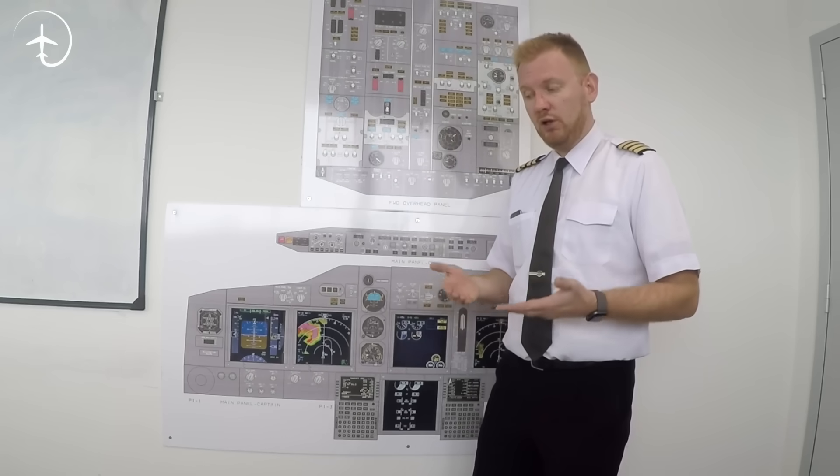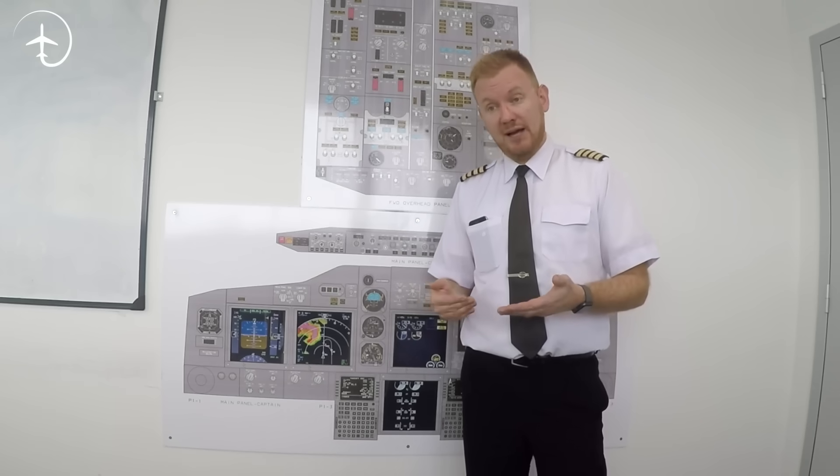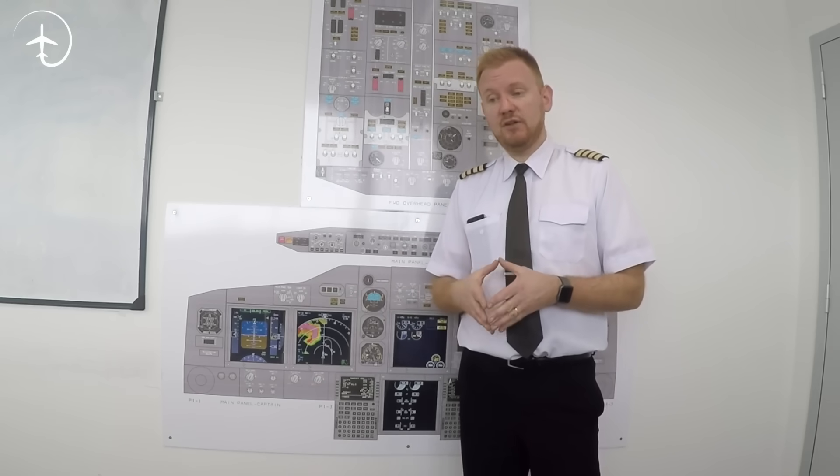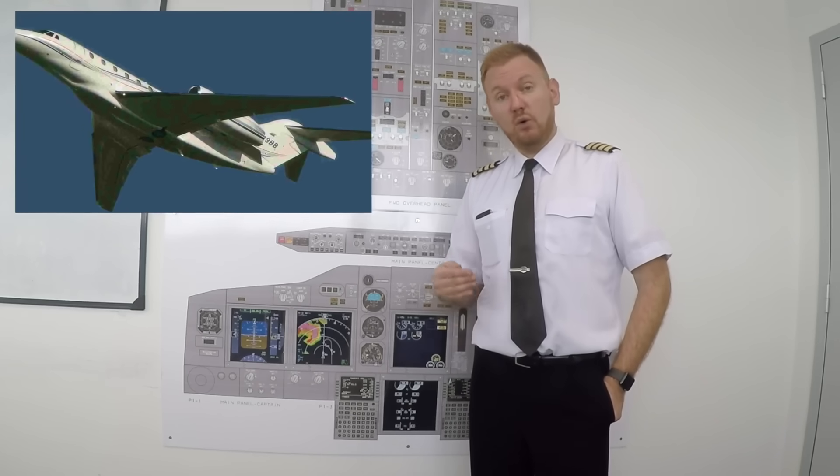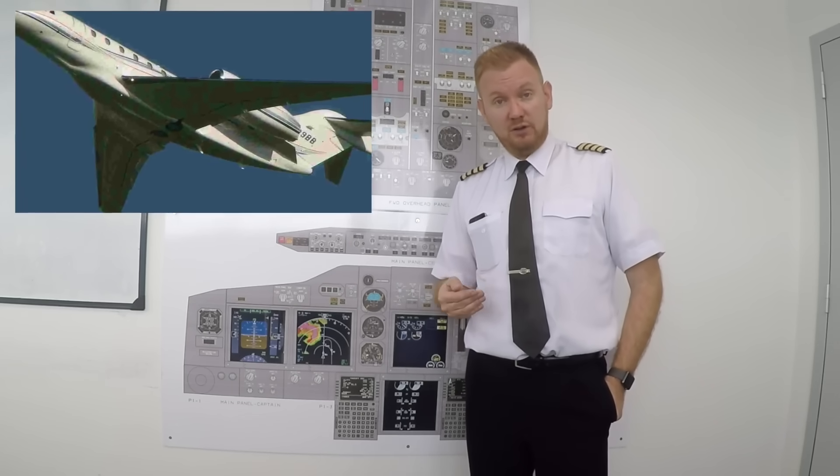And the 737 MAX is far from alone with having this type of solution. So basically all aircraft that are lower down to the ground have exposed wheels. And even some really high-performance private jets like the Cessna Citation X, for example, also have exposed main wheels.